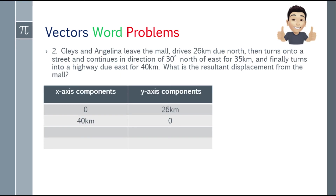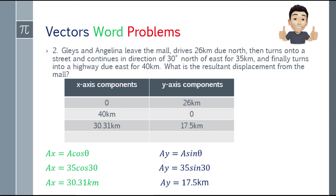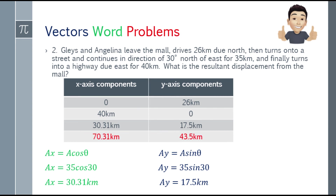The y-axis component includes the 26 kilometers due north. And 40 kilometers due east is positive on the x-axis. For the 35 kilometers at 30 degrees north of east, we need to break it down. The x component: 35 cosine 30° = 30.31. That's the x-axis component. For y: 35 sine 30° = 17.5. Note that both components are positive.